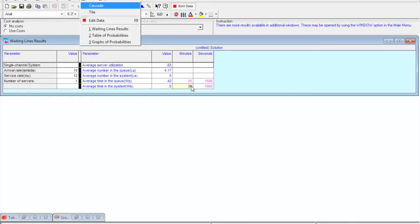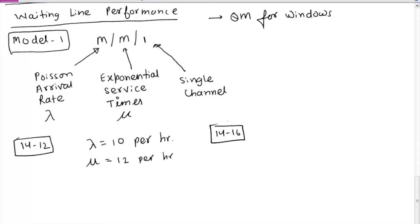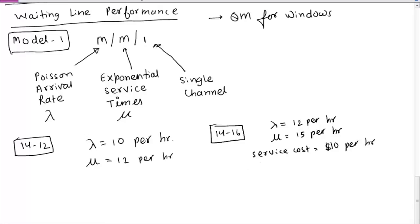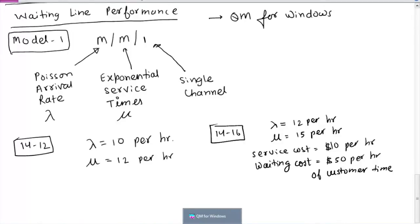Part D is utilization rate of the car wash — 83 percent as we have seen. For part E, the probability that no car is in the system, you can get an idea from server utilization: 1 minus 0.83 gives 17 percent. Now for the next part of the problem, lambda is 12 per hour, mu is 15 per hour, and the difference is that we also have cost figures.